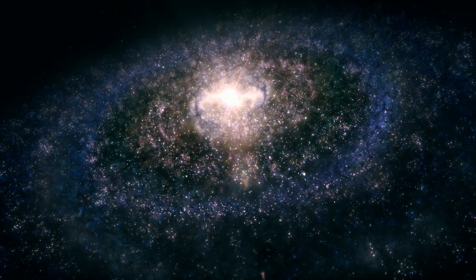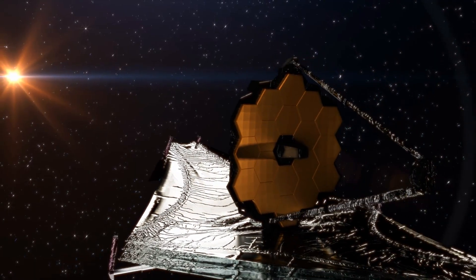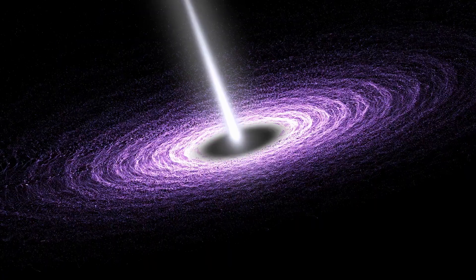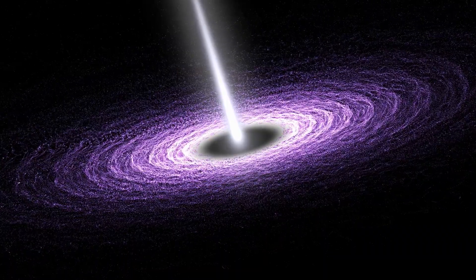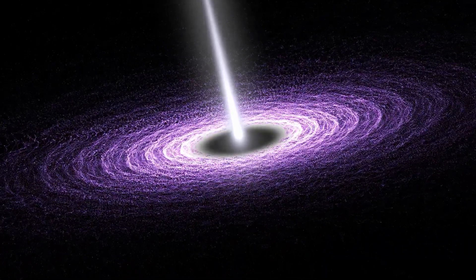Now, finding a galaxy that old isn't what's shocking. JWST is designed to see galaxies from that epoch. But finding a spiral galaxy, a neat, well-defined, structured spiral, is where things take a hard left turn. Why?